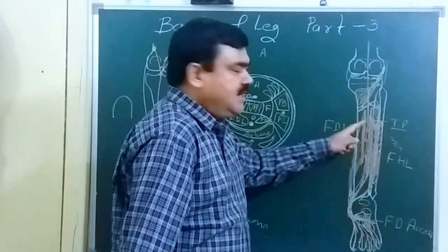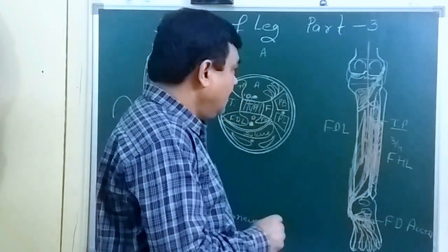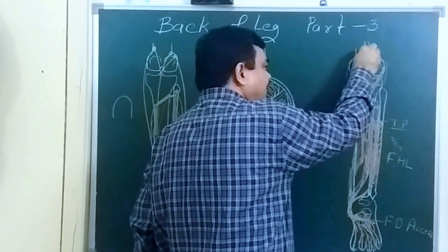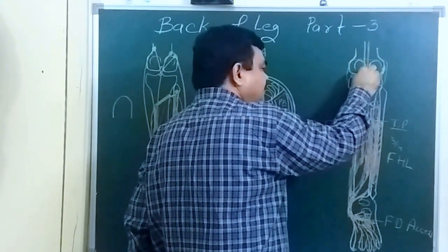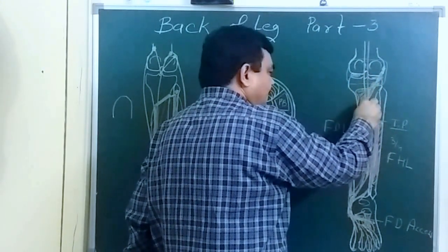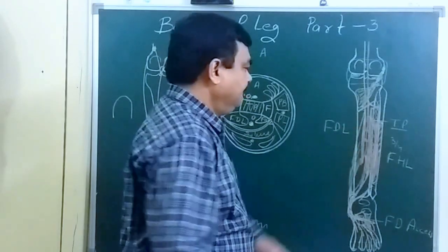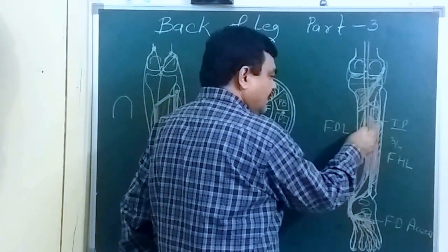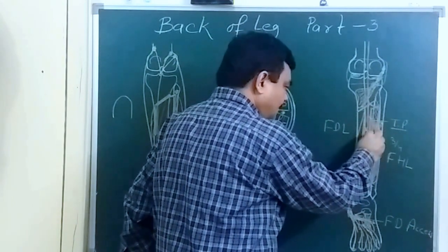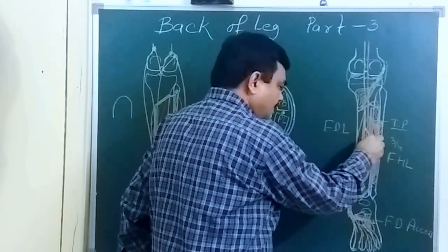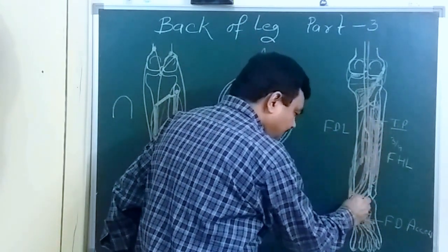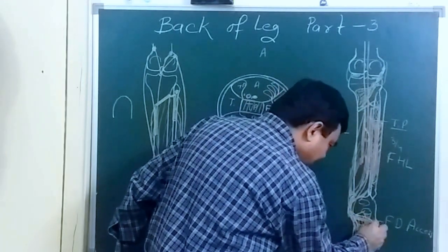Now for the nerve supply: the tibial nerve initially lies medial to the artery in the upper part. At the level of the middle of the leg, it crosses the artery and reaches the lateral side of the artery, accompanying it distally.